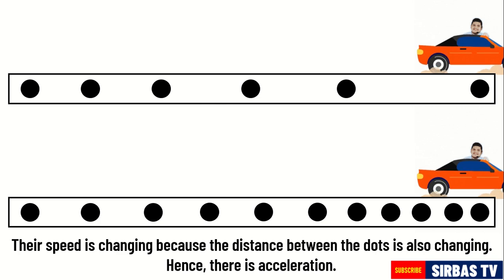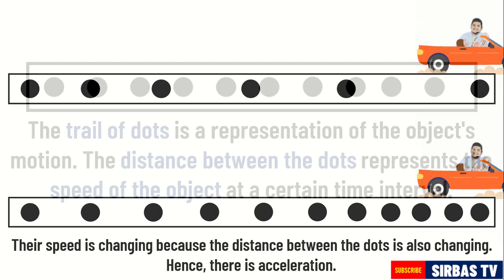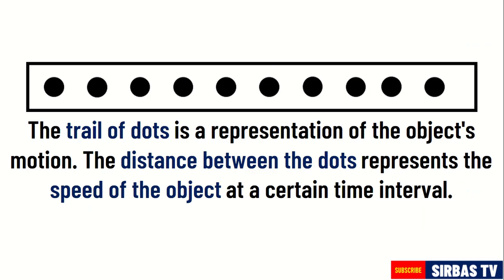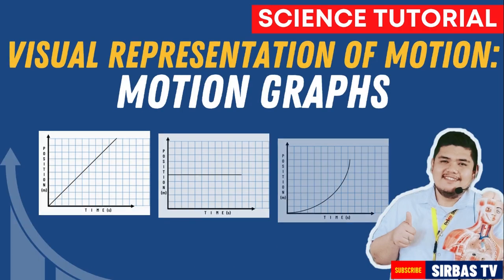And that ends our discussion about describing motion using diagrams, specifically a ticker tape diagram or a dot diagram. Remember that the distance between the dots is a representation of the motion of the object.